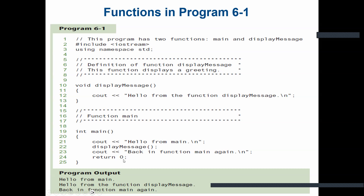The main function always returns int 0. The program includes the definition of displayMessage — a void function that prints its message. As usual, we include iostream and using namespace std. The output is: first 'hello from main,' second 'hello from the function displayMessage' when displayMessage is called, and third 'back in function main again.'